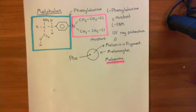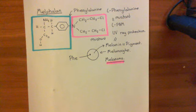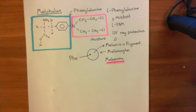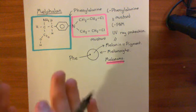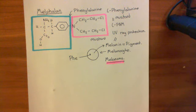Welcome to this next video in which we are discussing the nitrogen mustard drugs. We've seen the nitrogen mustard, also known as mechlorethamine, chlormethine, and HN2. We've also seen melphalan, also known as L-phenylalanine mustard, or L-PAM.